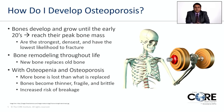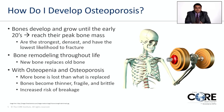As we get older, we reach peak bone mass in our 20s — the greatest mineralization, density, and strength. Through our life, bone remodeling occurs approximately every seven years, replacing all minerals including calcium. With osteoporosis and osteopenia, more bone is lost than replaced, causing bones to become thinner, more fragile, and more brittle, leading to the risk of breakage.